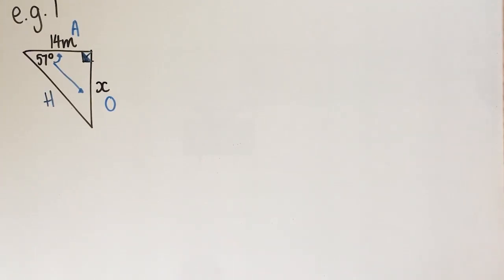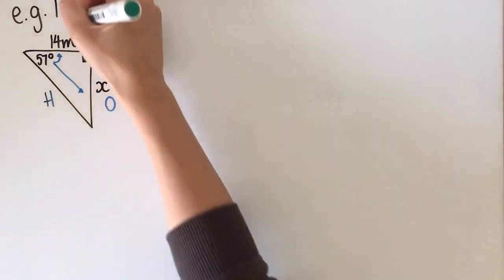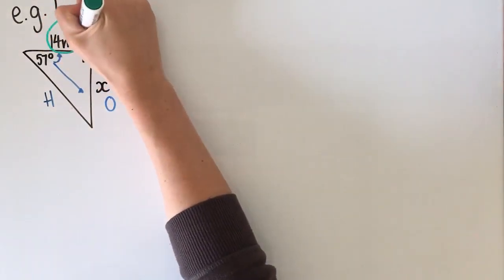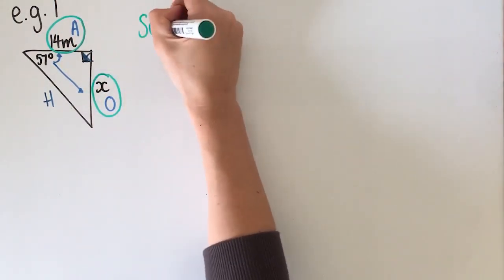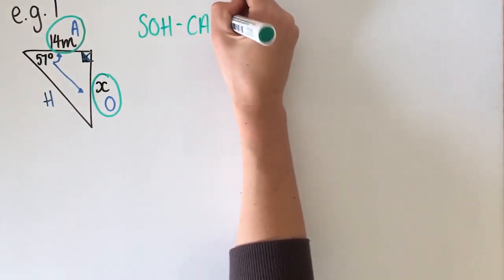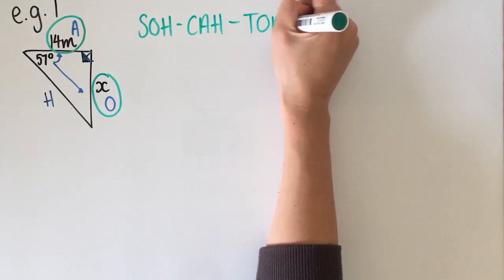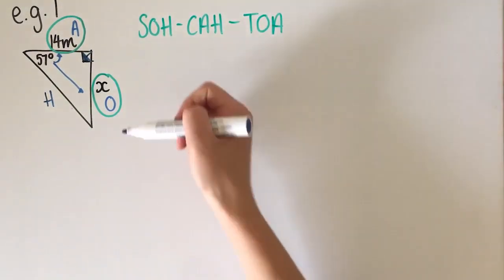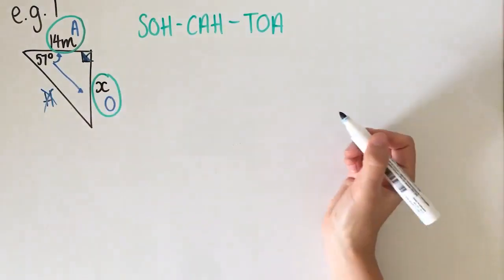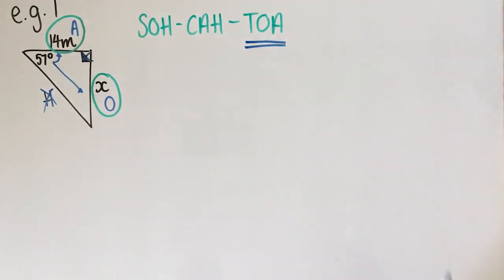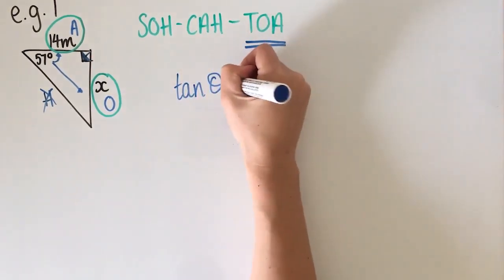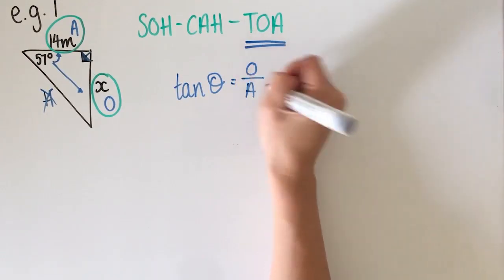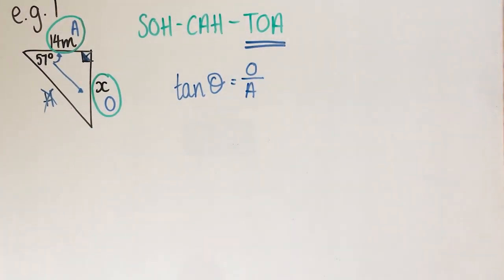Now I need to decide which trigonometric ratio to use. I know that I need an A and an O, so I'm going to write out SOH-CAH-TOA and decide which one I need. Since I need an O and an A, I'm going to use tangent — tan of an angle is opposite over adjacent. That's the ratio I'm going to be using.